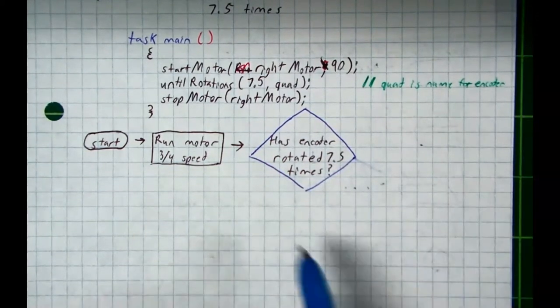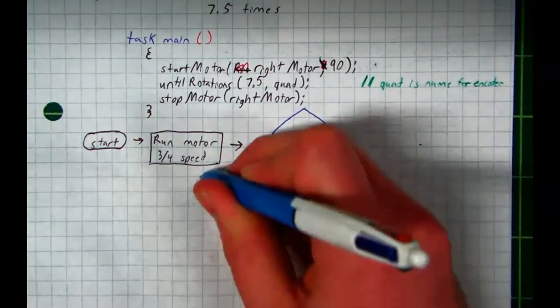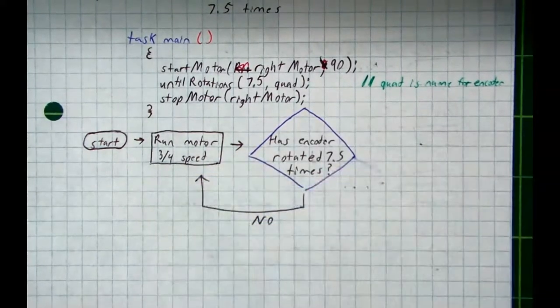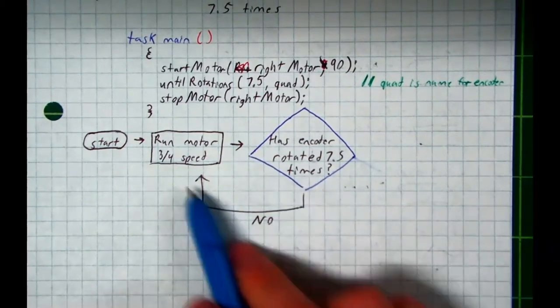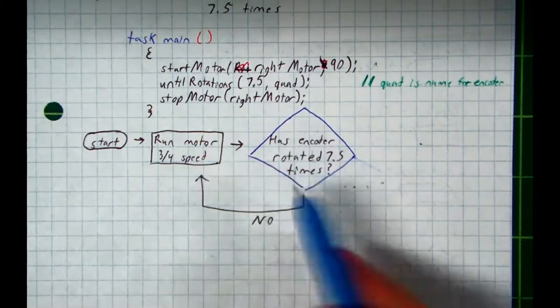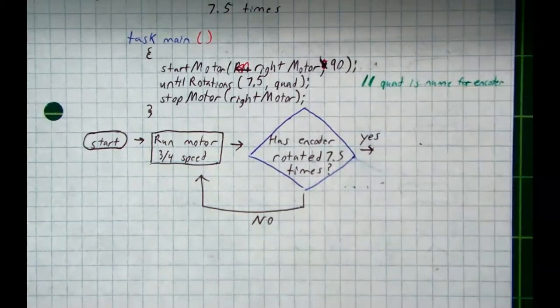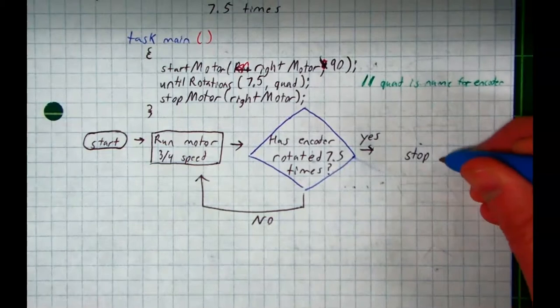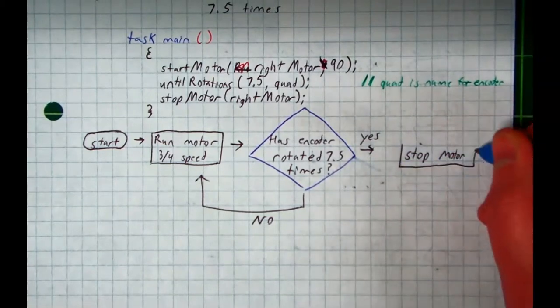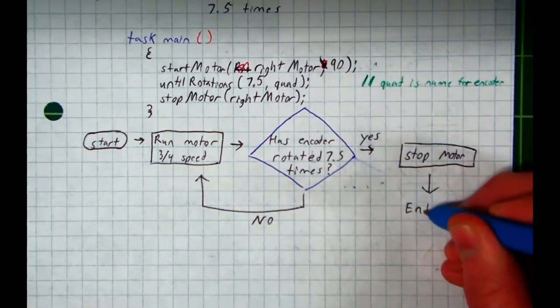If no, this is very complicated. I want you all to pay very close attention. What I do if the answer is no. Let the motor keep running. And constantly keep checking to see if it's true. What happens when it's true? When it's true or yes, yes. Stop motor. This would be a process as well. And then we can end our program.